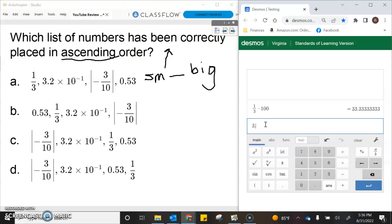We've got 3.2 times 10, and we're going to raise that to the negative 1 power, then multiply that by 100.